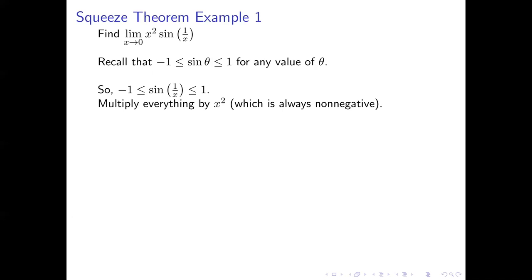Now let's take that compound inequality and multiply everything by x². Note that x² is always non-negative, so we don't need to worry about switching the direction of our inequality signs — which we would have to do if multiplying by a negative number. Multiplying through by x², we get the compound inequality: -x² ≤ x²·sin(1/x) ≤ x².